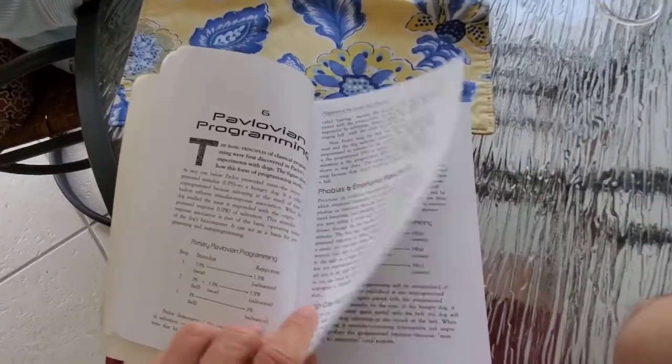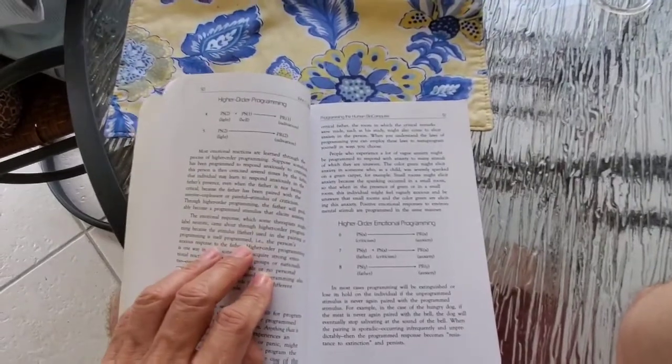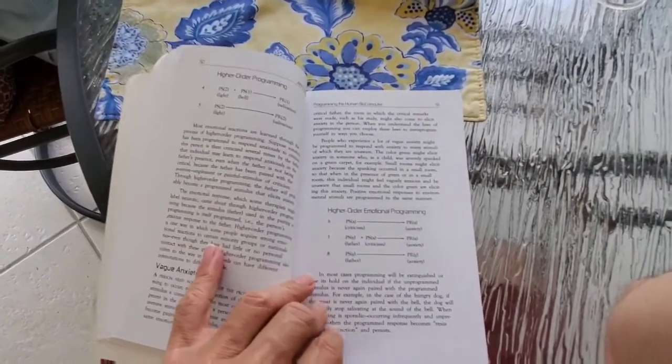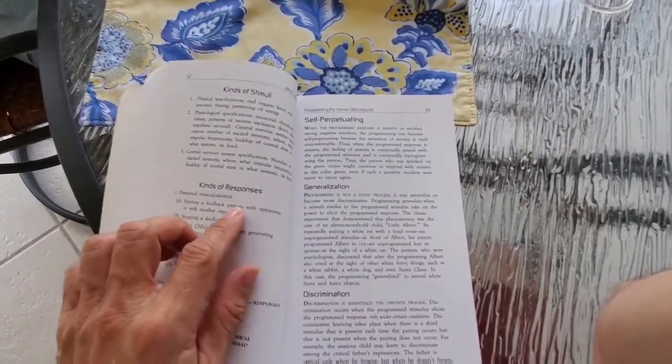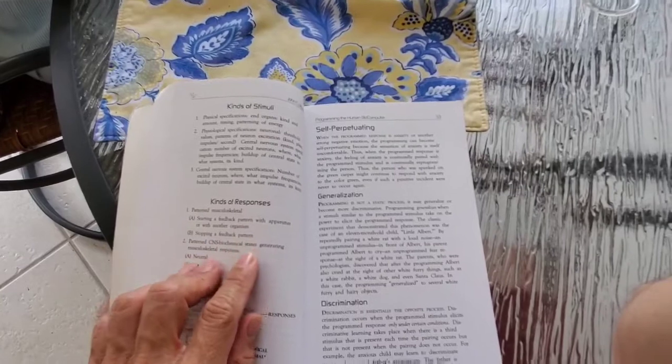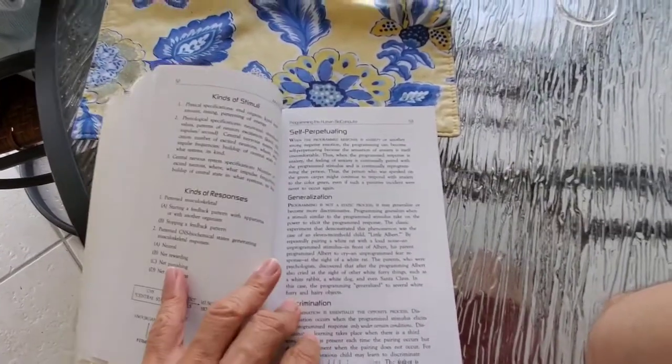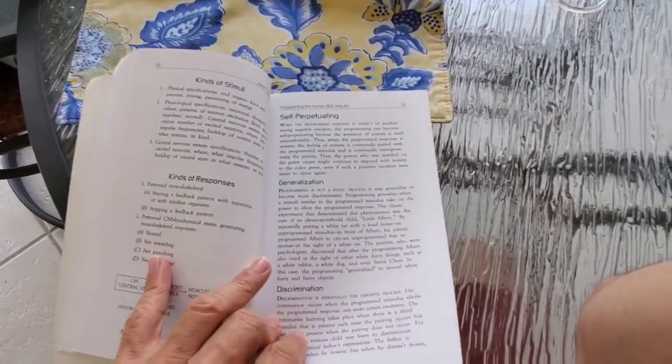High-order programming. Vague anxiety. High-order emotional programming. Kind of stimuli, kind of responses. Self-perpetuating generalization.